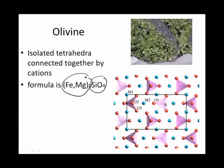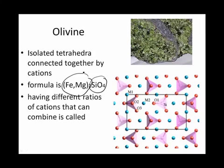The formula FeMgSiO4 tells you that it contains isolated tetrahedrons, SiO4, but also that the iron and magnesium can substitute for each other. Having different ratios of cations like this could be called a solid solution.